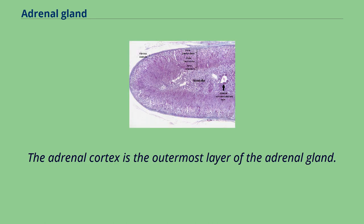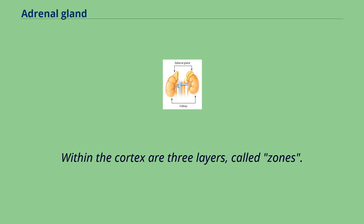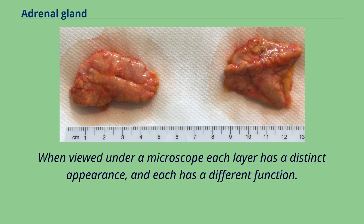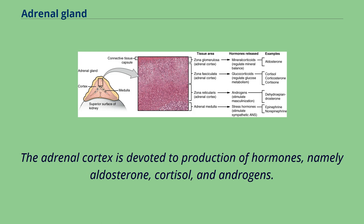The adrenal cortex is the outermost layer of the adrenal gland. Within the cortex are three layers, called zones. When viewed under a microscope, each layer has a distinct appearance and each has a different function. The adrenal cortex is devoted to production of hormones, namely aldosterone, cortisol, and androgens.